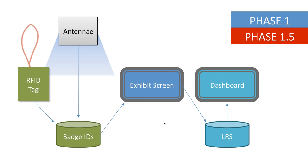We put an RFID tag on a kid — it's a $0.65 tag that we laminate into a little lanyard. When they get near an exhibit, the antenna picks them up, recognizes their badge ID, and the screen wakes up and recognizes them by name. Phase 1 and Phase 1.5 were very limited tests with only six exhibits, just doing a proof of concept to see if we could make the whole thing work. The exhibit screen would wake up with their name, keep track of their interactions with the screen, and send that information to an LRS. We used a free account on SCORM Cloud, and the entire xAPI portion of the project was done in between 50 to 70 hours using copied and pasted JavaScript from the web, ADL resources, and a free account.